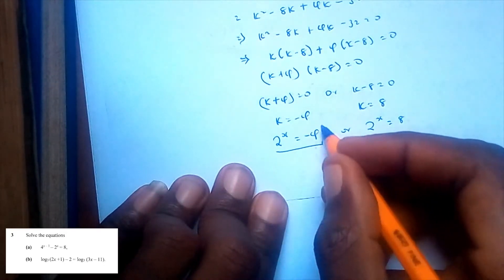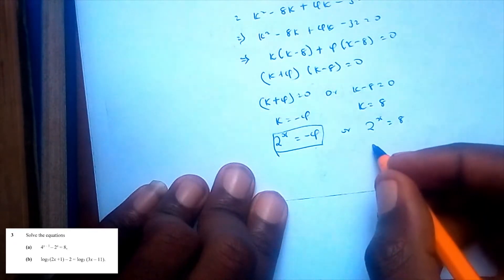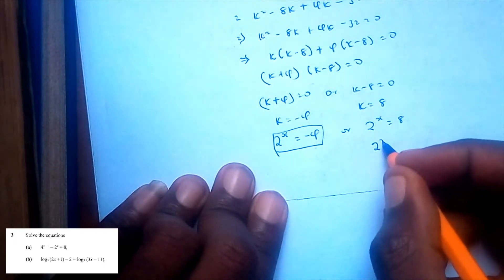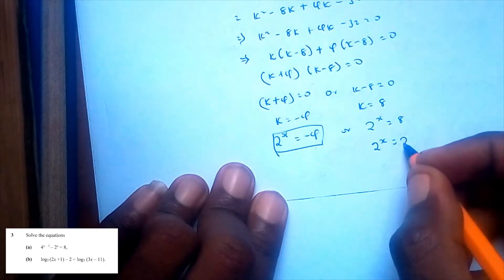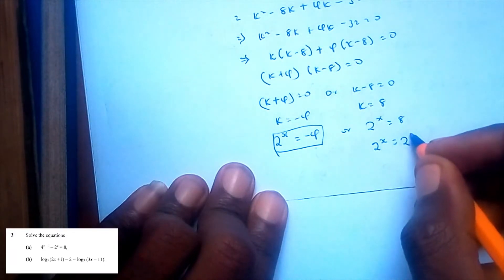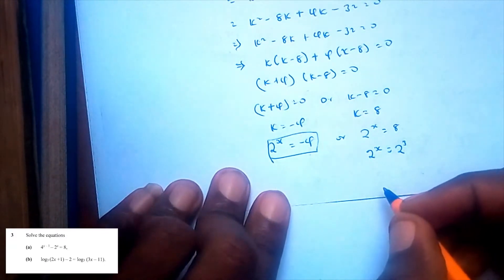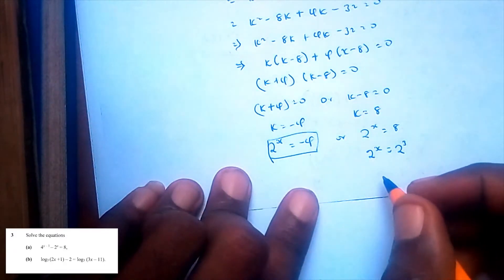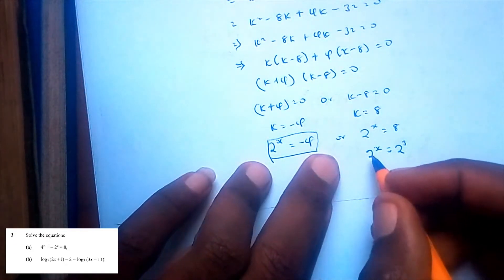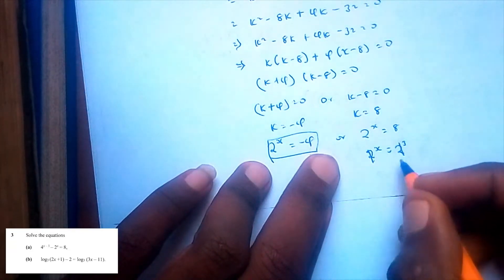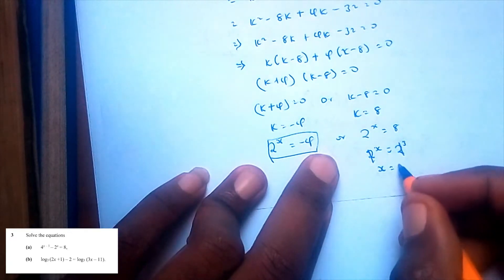2 to the power x equals negative 4 is undefined. For the other solution, 2 to the power x equals 8, we can write this as 2 to the power 3, so the bases cancel and x is equal to 3.